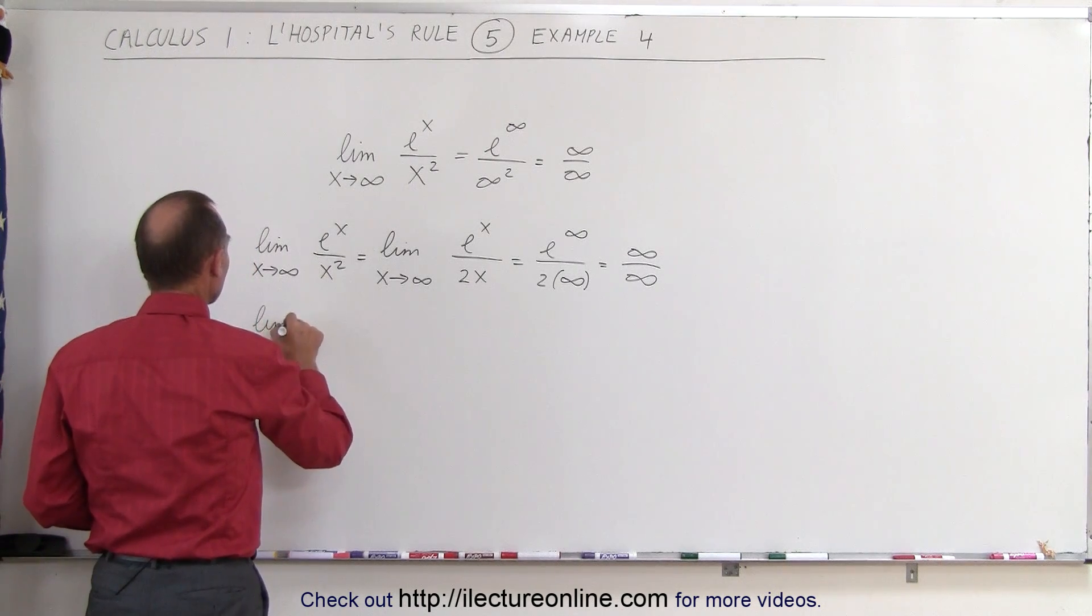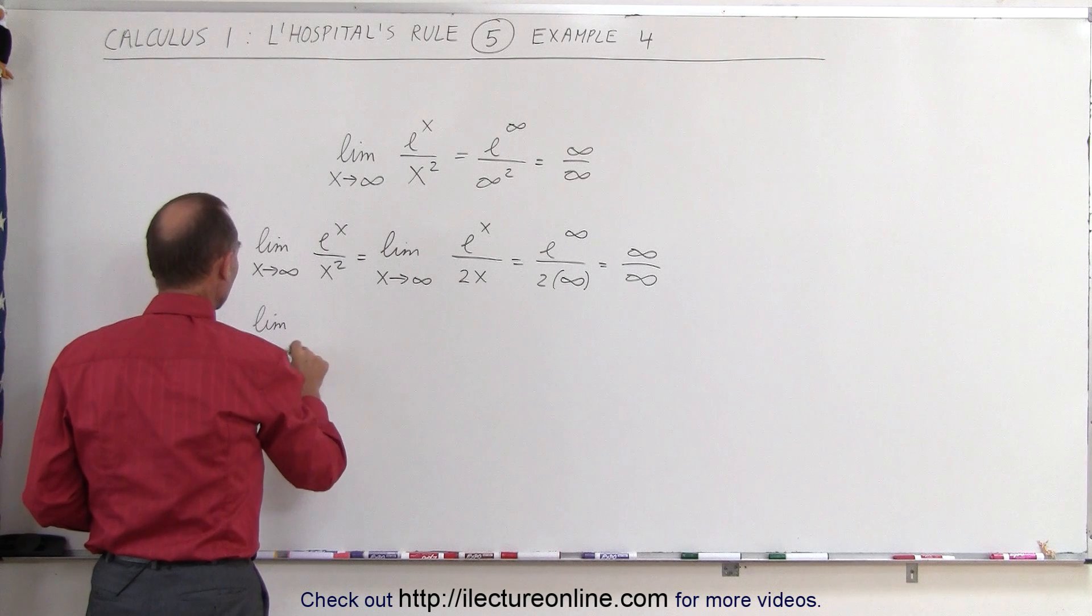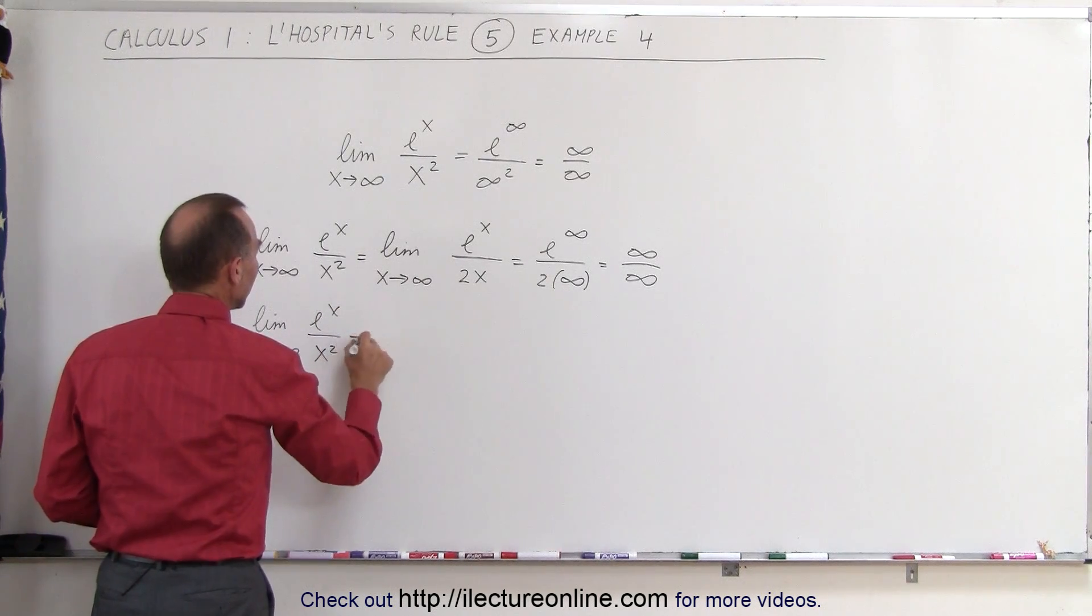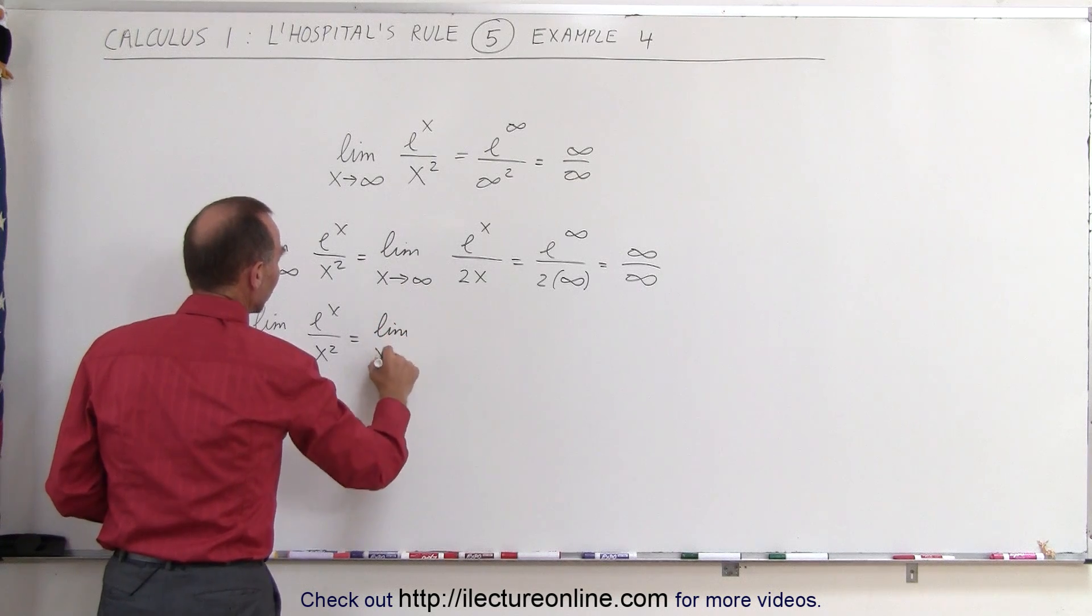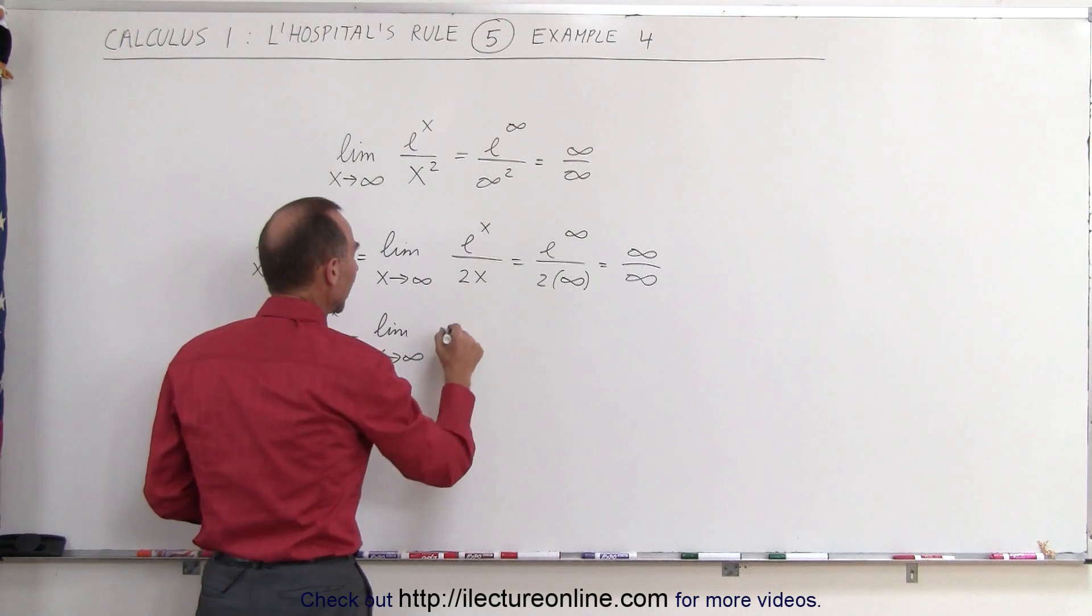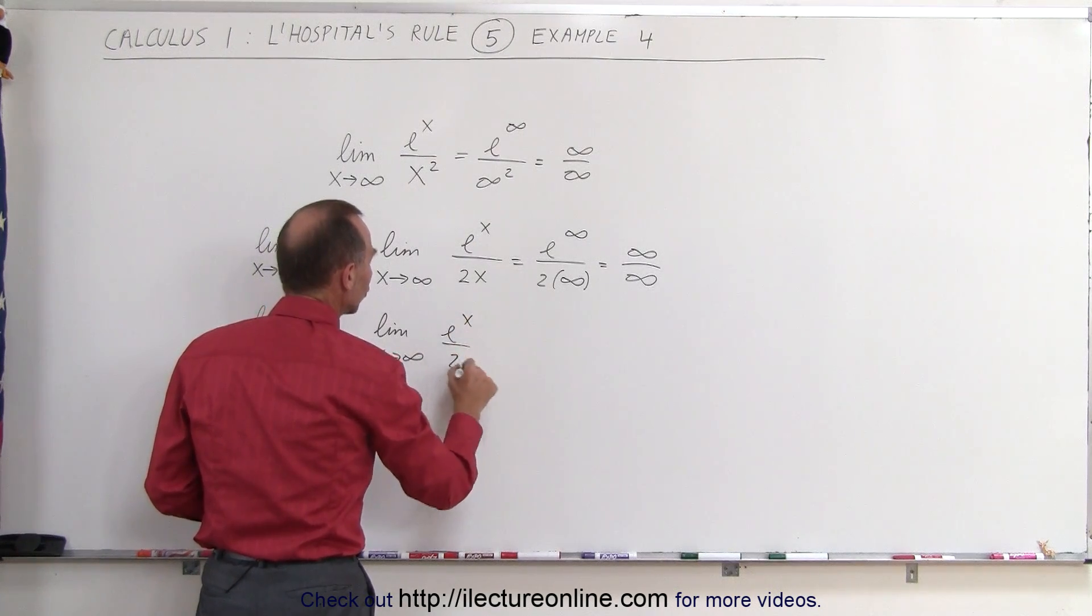Now we can say that the limit as x approaches infinity of e to the x divided by x squared is equal to the limit as x approaches infinity - but now we take the derivative of that again, so we get e to the x divided by 2.